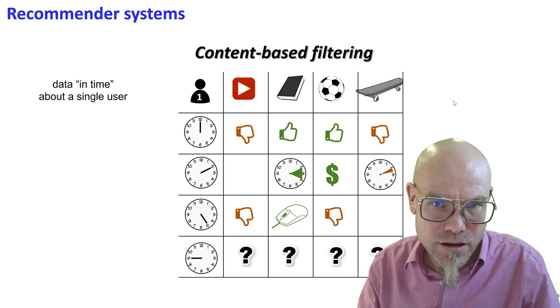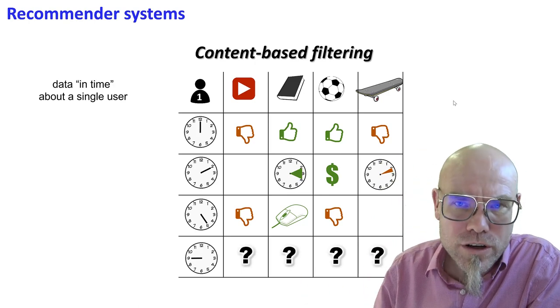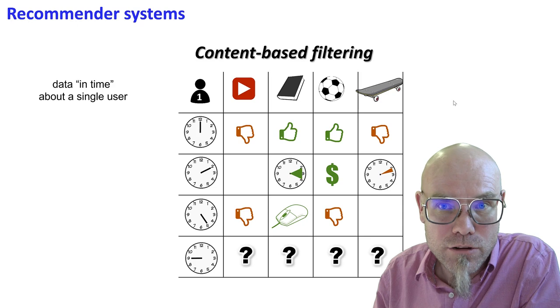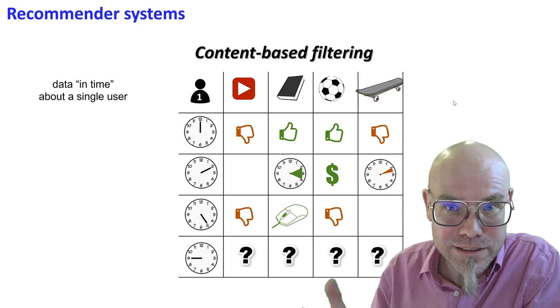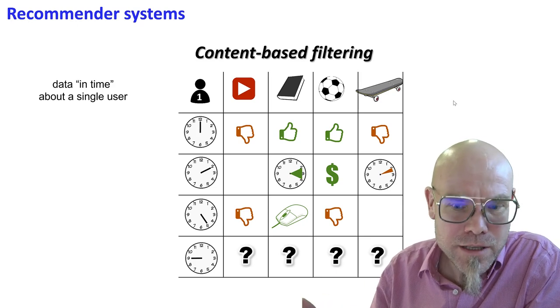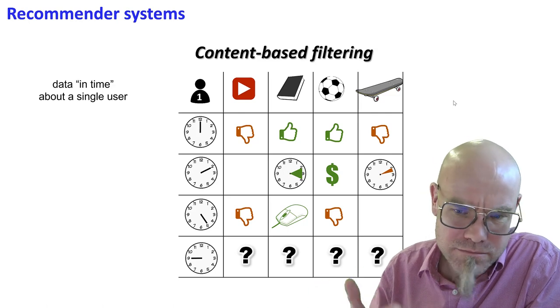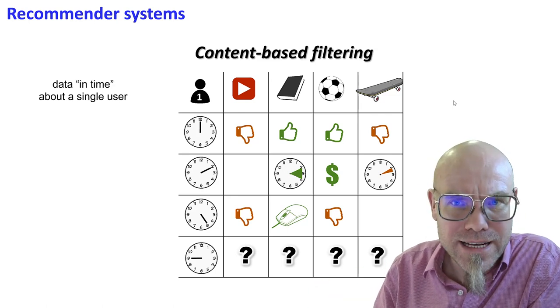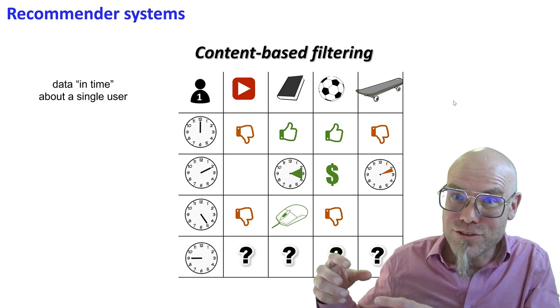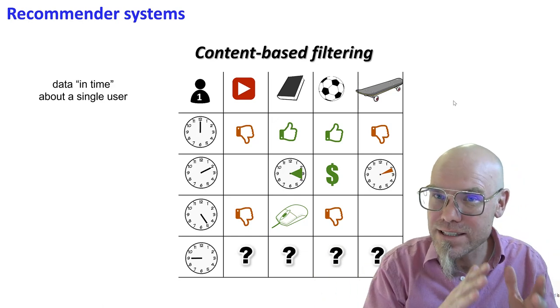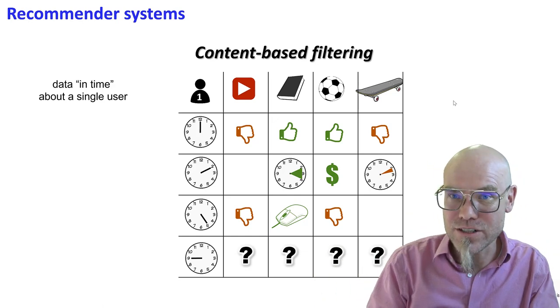Now I'm Amazon's recommender algorithm. What products do I think I will recommend to you? Which one do you think I recommend? It's pretty obvious, right? It's a book nerd. That falls out of the data. So now I have information about your behavior in time. That's called content-based filtering.